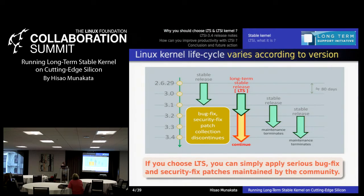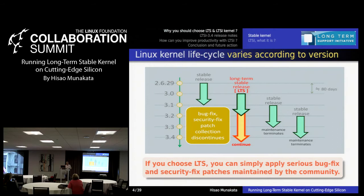Each regular kernel maintenance period lasts two generations. For example, if 2.6.29 is released, its maintenance period lasts until 3.1 is released. Currently the Linux kernel releases every 70 or 65 days, so two generations means roughly 150 days, about 3 to 5 months. This means most people are not using the freshest kernel in their products. Today's latest is 3.9, but many people are still using 3.4, 3.3, or even 2.6.x. So in most cases, the community maintenance has already terminated for your kernel, which is not good.